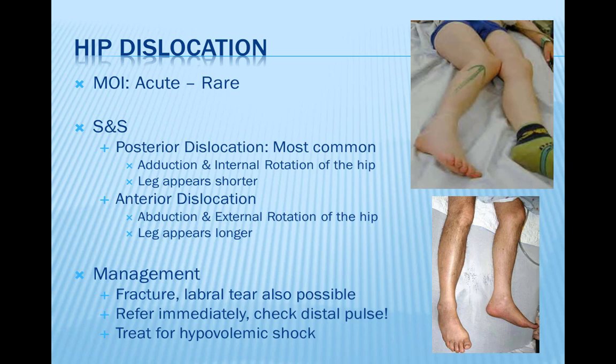Dislocation of the hip is an uncommon injury where the ball-shaped head of the femur comes out of the cup-shaped acetabulum in the pelvis. Hip dislocations occur more commonly in females. Nine out of ten hip dislocations are posterior; in a posterior dislocation, the affected limb appears shortened, adducted, and internally rotated. In an anterior dislocation, the limb appears longer, abducted, and externally rotated. In both cases, the leg is virtually immovable and extremely painful. Early referral is important, and one should suspect a possible fracture or labral tear, check the distal pulse, and treat for hypovolemic shock.